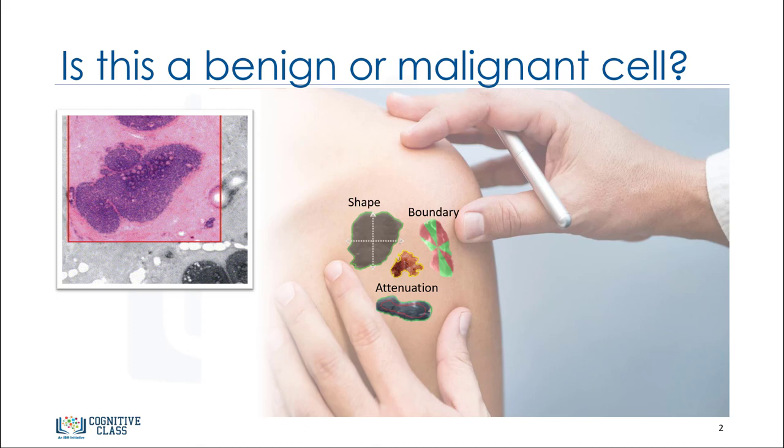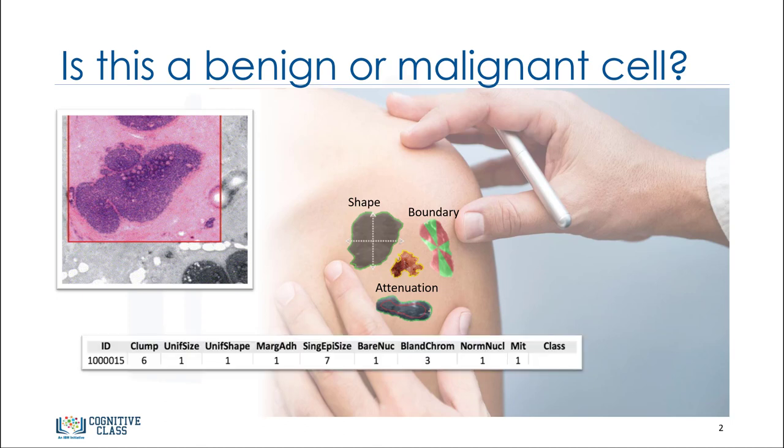This is a human cell sample extracted from a patient, and this cell has characteristics. For example, its clump thickness is 6, its uniformity of cell size is 1,